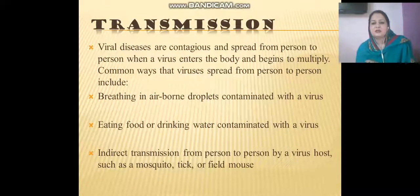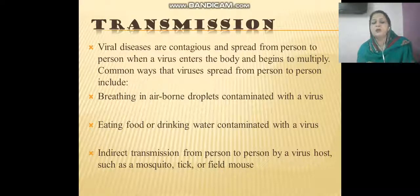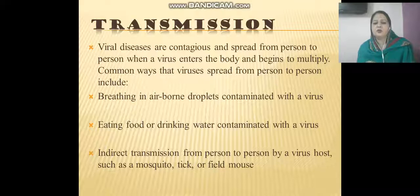Firstly, what is transmission, or how does a disease transmit? Diseases are contagious and spread from one person to another. The virus enters the body and begins to multiply. Transmission can occur by breathing in airborne droplets, consuming contaminated water or food, or through indirect transmission via a virus host such as mosquitoes, ticks, and other animals.